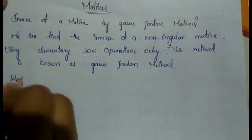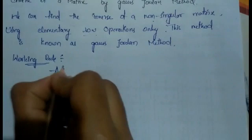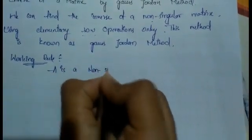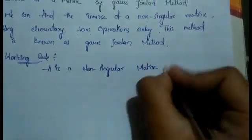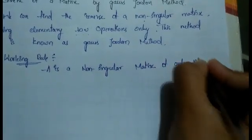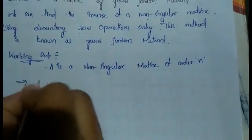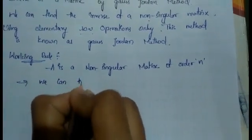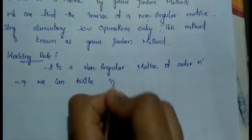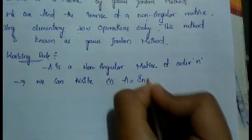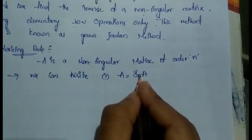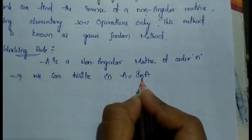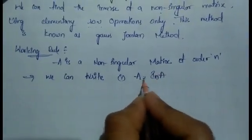Now the working rule of this method is: if A is a non-singular matrix of order n, we can write the matrix as A equals I_n into A — that means A equals the identity matrix of order n times A. If it is a 3×3 matrix, n will be 3; if it is a 2×2 matrix, n will be 2.